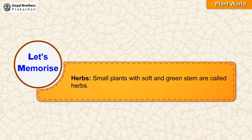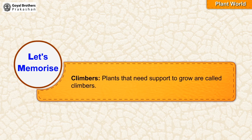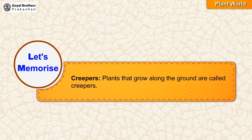Herbs: small plants with soft and green stem are called herbs. Climbers: plants that need support to grow are called climbers. Creepers: plants that grow along the ground are called creepers.